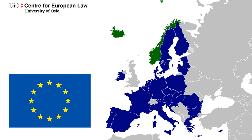The European Union, or the EU, is a union of 27 European states, colored in dark blue on the map. It was first established as the European Coal and Steel Community, which consisted of only six states, on the 18th of April 1951, more than 70 years ago.